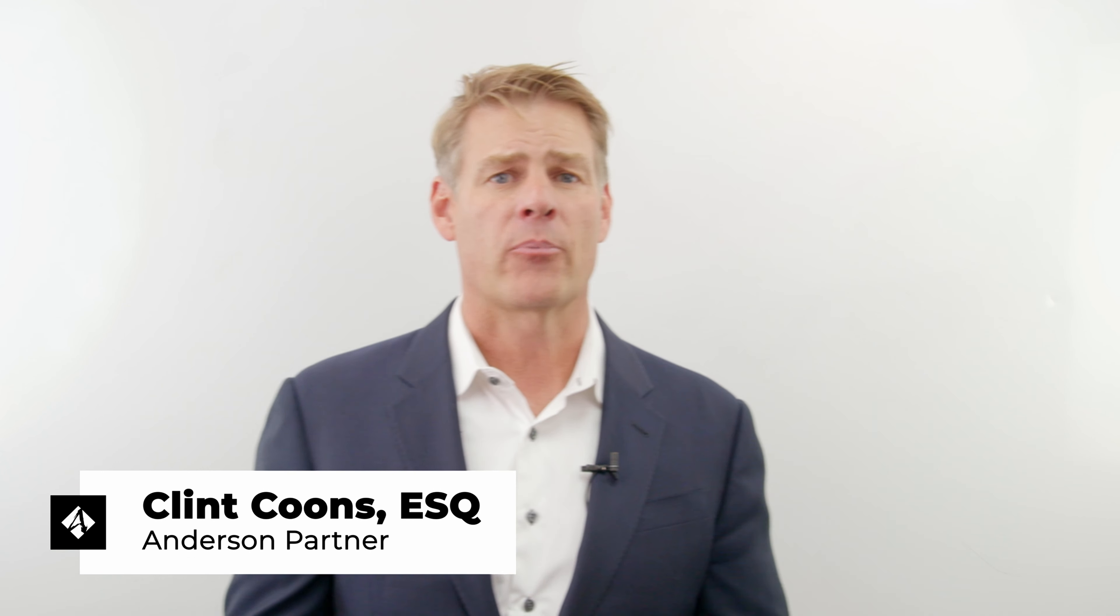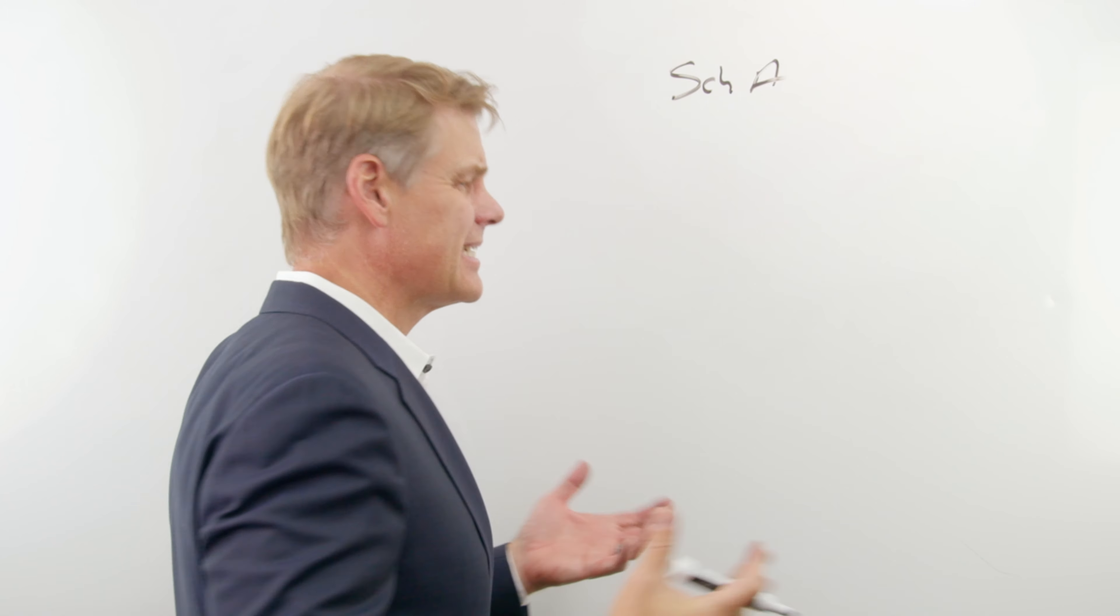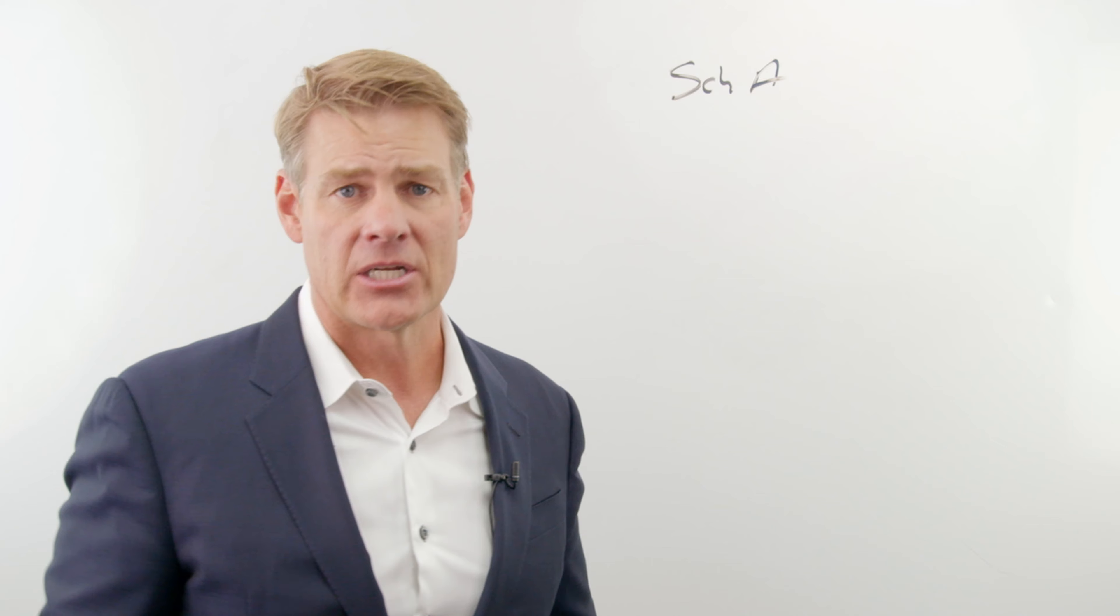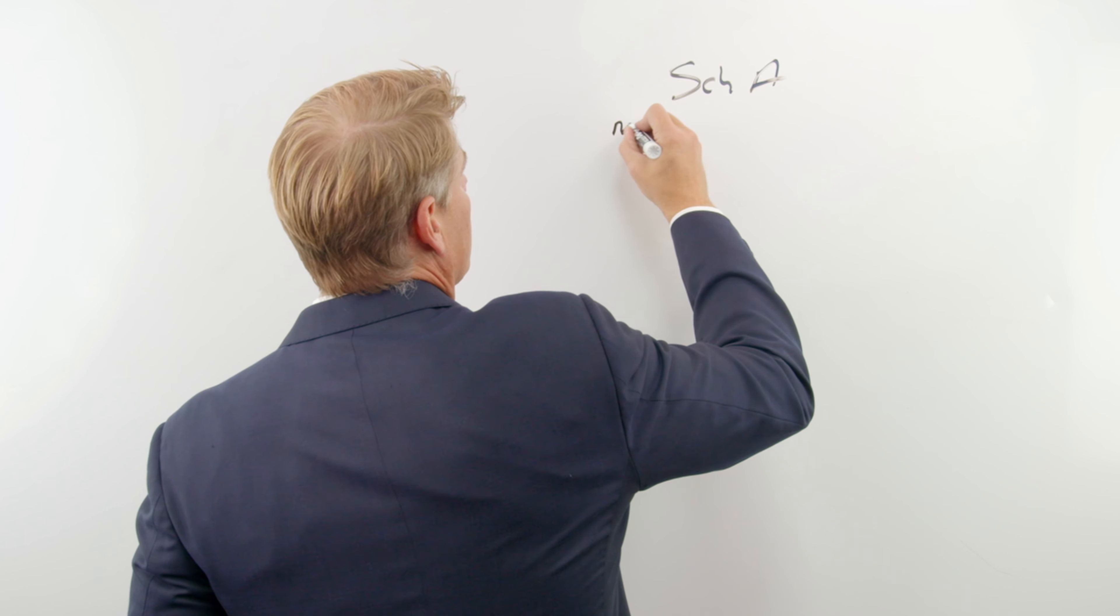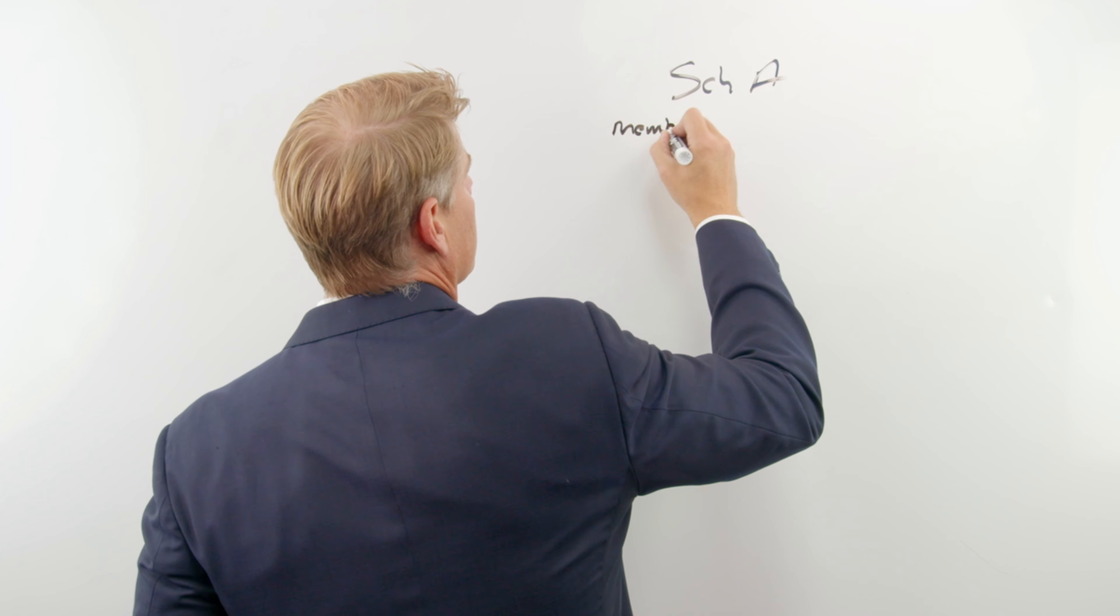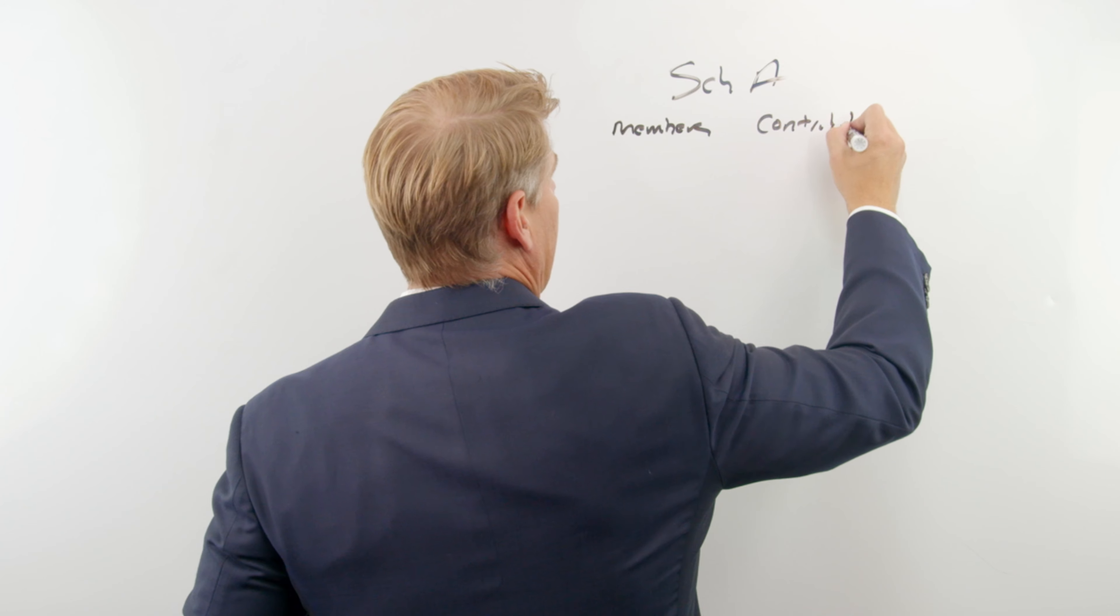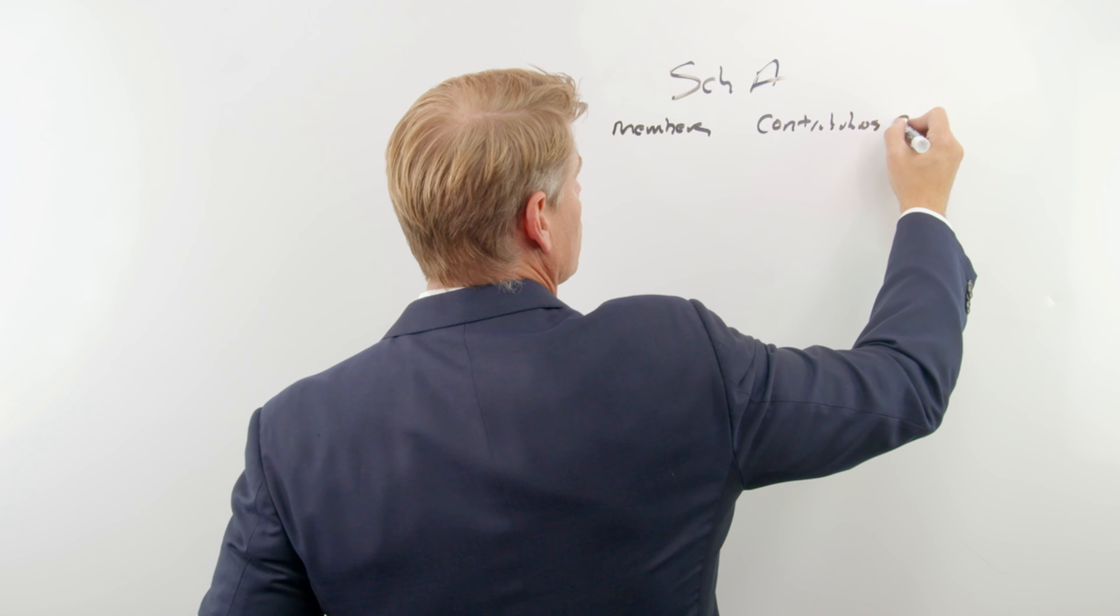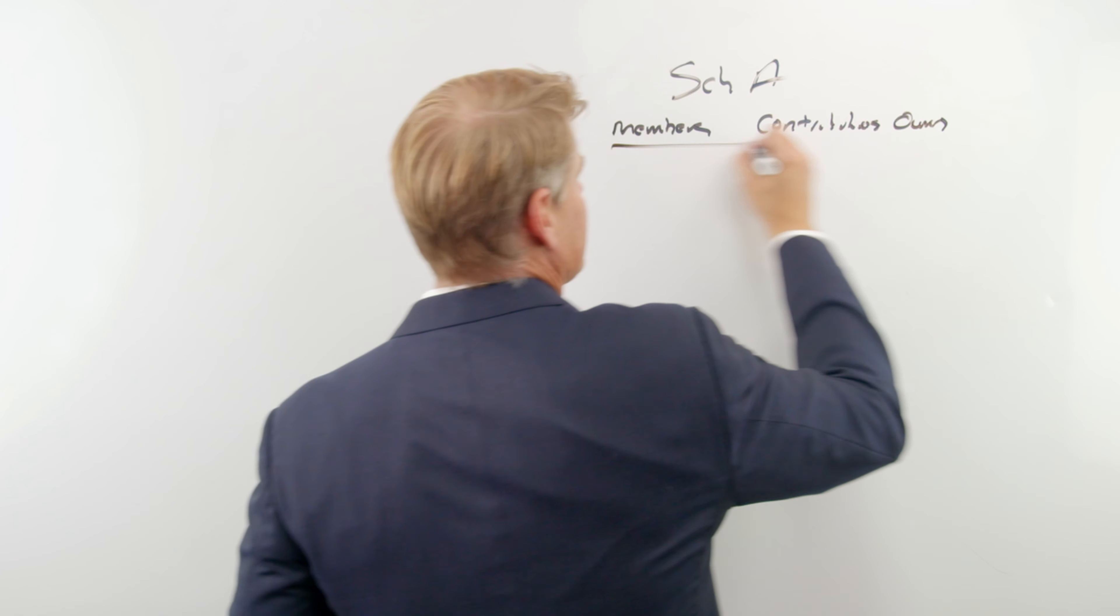Now, if you've looked at your LLC, you probably have an operating agreement that may have what is referred to as a Schedule A, or maybe it's an Exhibit A. It's at the back of the operating agreement after the signature page. And on that page, typically it's gonna list out who the members of the LLC are, and they're gonna wanna know contributions and ownership percentages, depending on how your LLC is set up.